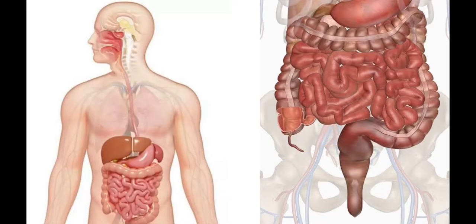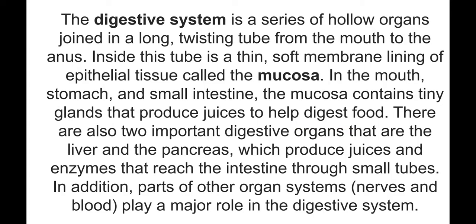At this picture the digestive system of your body is presented schematically. The digestive system consists mostly of hollow organs joined in a long twisting tube from the mouth to the anus. Inside this tube there is a thin soft membrane lining of epithelium tissue called mucosa. In the mouth, stomach and small intestine the mucosa contains tiny glands that produce juices to help digest food.